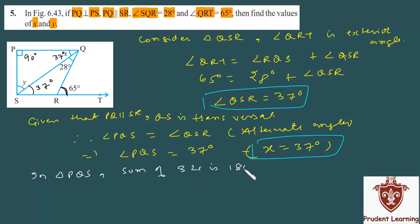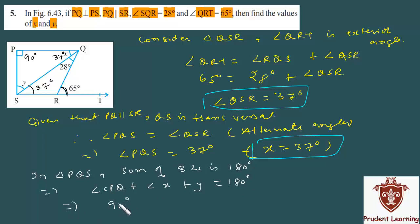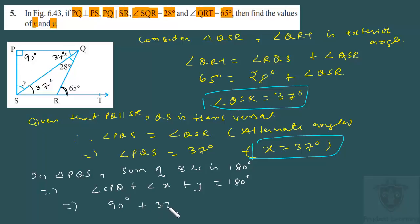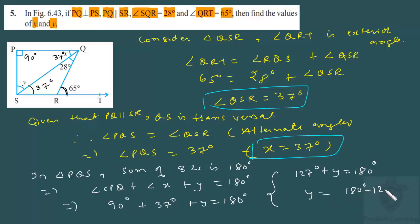Now, angle SPQ plus angle x plus angle y equals 180 degrees (angle sum property of a triangle). Angle SPQ is 90 degrees because PQ is perpendicular to PS. So 90 degrees plus 37 degrees plus y equals 180 degrees. That gives 127 plus y equals 180, so y equals 180 minus 127, which is 53 degrees.